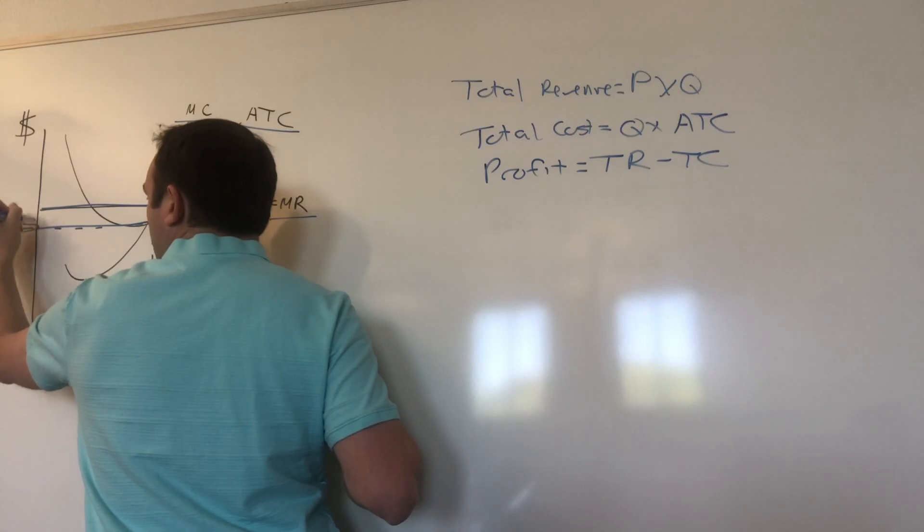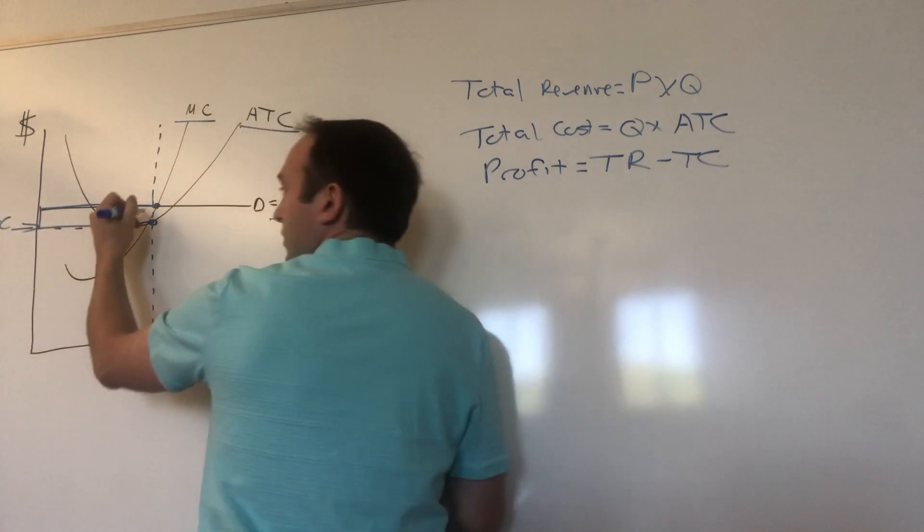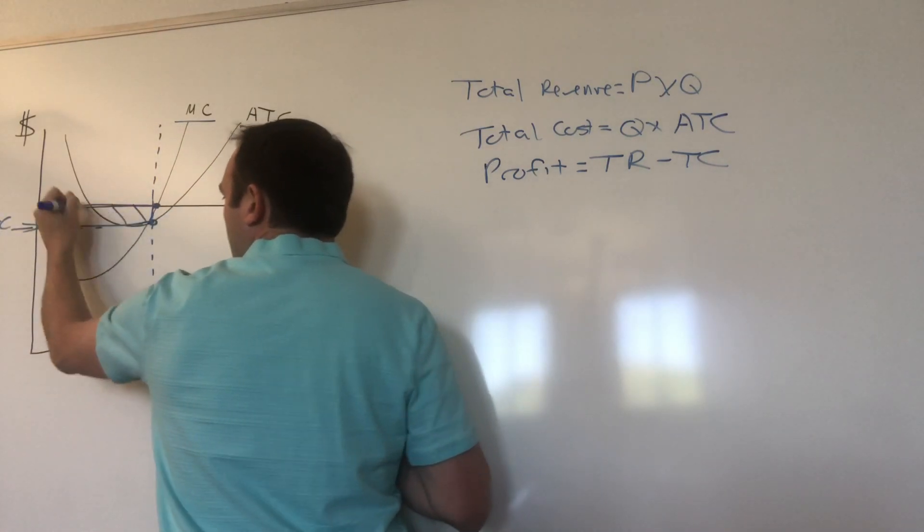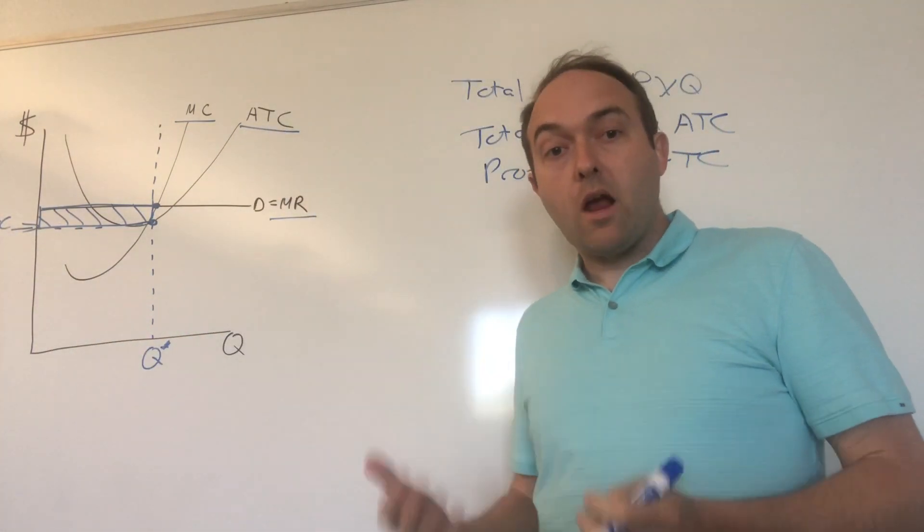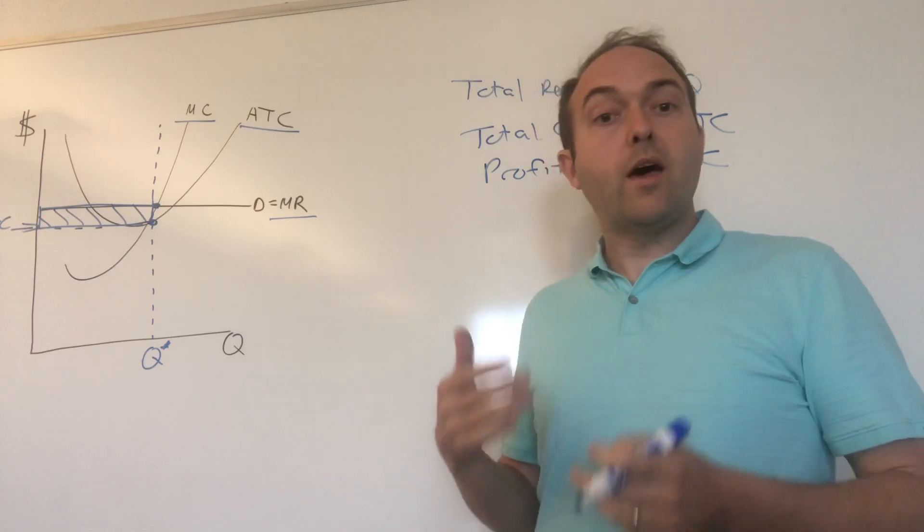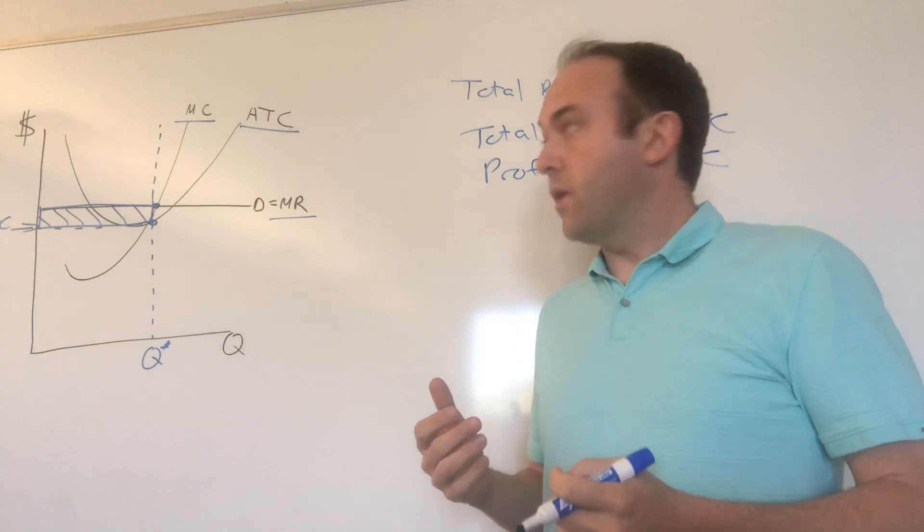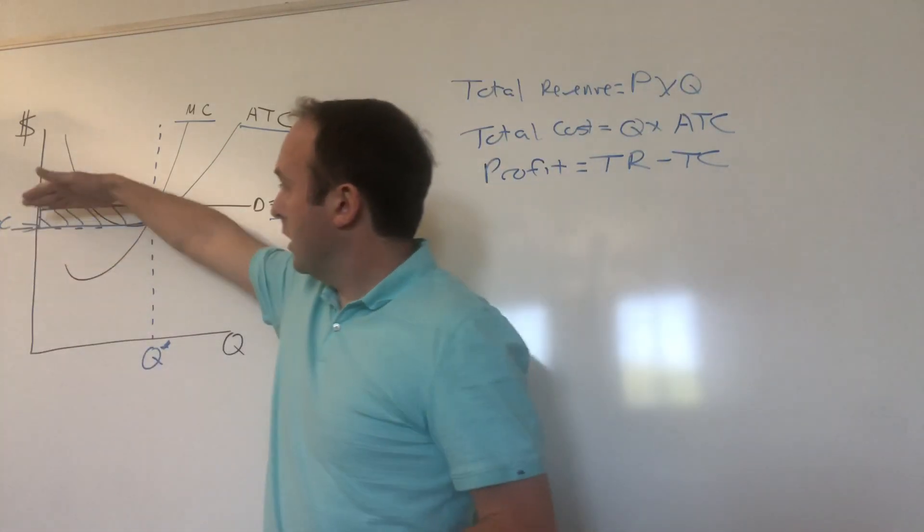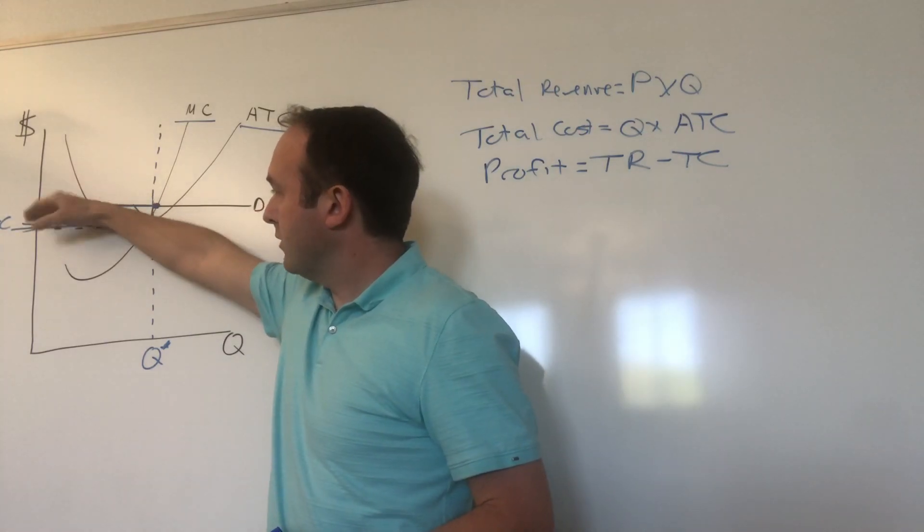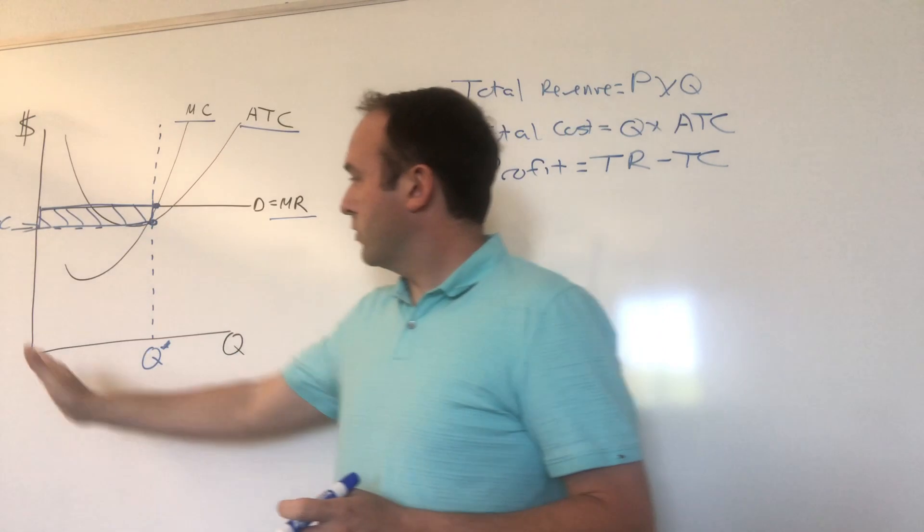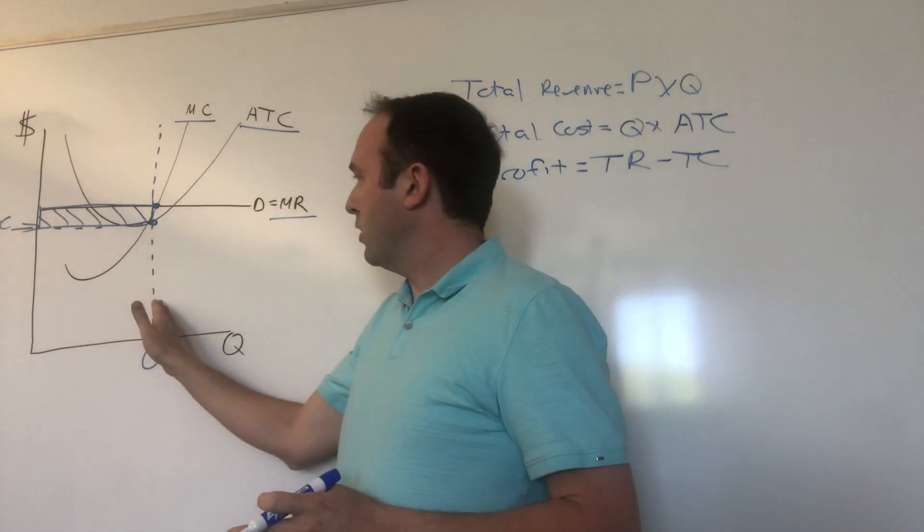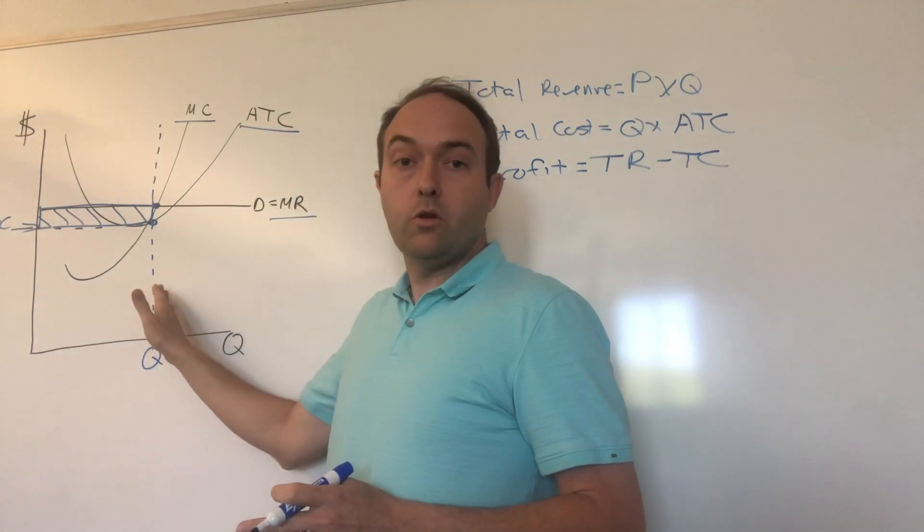Price, ATC, Y axis, Q star. That's your profit box. The area of the box is just the height times the width. So for the height, you take the difference between price and ATC. That's this distance here. The width is just going from your Y axis over to Q star. That's just going to be the value Q star.